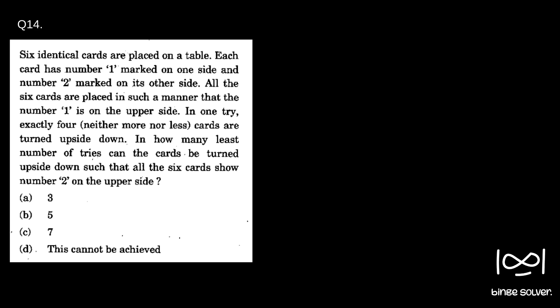All the six cards are placed in such a manner that the number one is on the upper side. In one try exactly four neither more nor less cards are turned upside down. In how many least number of tries can the cards be turned upside down such that all six cards show number two on the upper side.